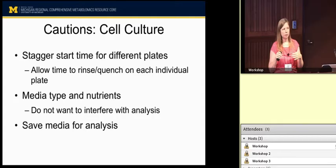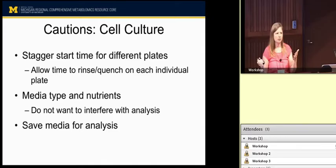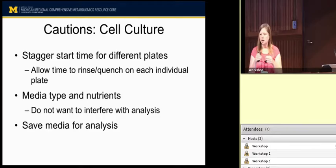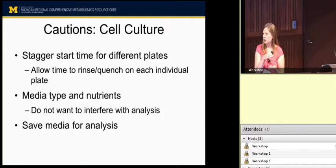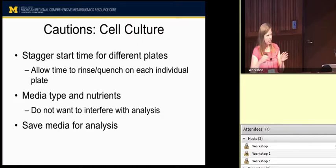A couple of cautions with cell culture: it's important to stagger your start time. Say you're doing a treatment for about 10 minutes. You give your drug or inhibitor for 10 minutes across six samples, then go to process them. Even with adherent cells where you're working rapidly, by the time you get to your last one it might have been 20 minutes — that's a huge difference. So make sure you allow for that in your timing and start them a little bit offset.